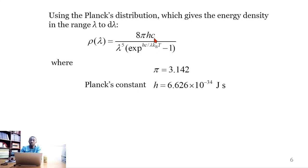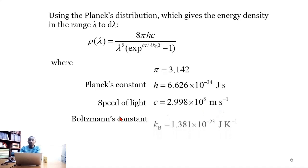The Planck's constant h is 6.626 times 10 to the power of negative 34 joules per second. The speed of light c is 2.998 times 10 to the power of 8 meters per second. And the Boltzmann's constant kB is 1.381 times 10 to the power of negative 23 joules per Kelvin.